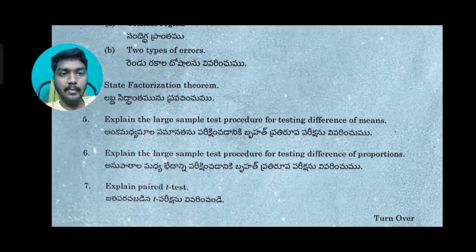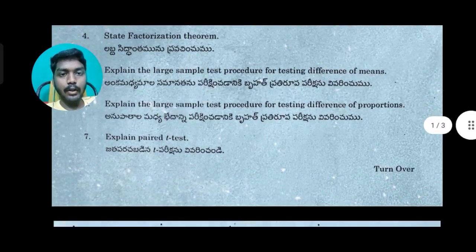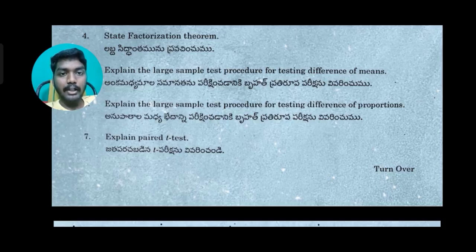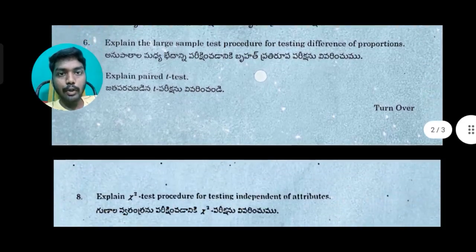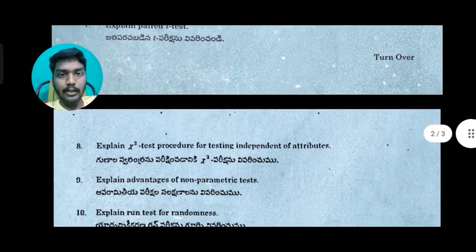The 5th question: explain the large sample test for testing the difference of means. The 6th question: explain the large sample test for testing the difference of proportions. The 7th question: explain the paired t-test. I also have a paired t-test question from the 2020 question paper.